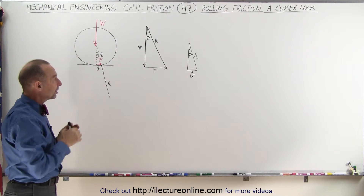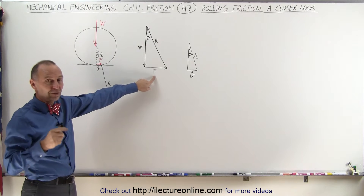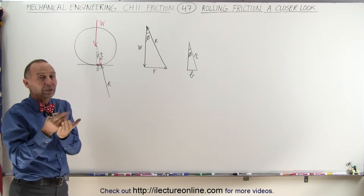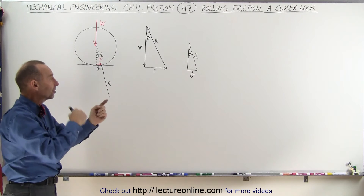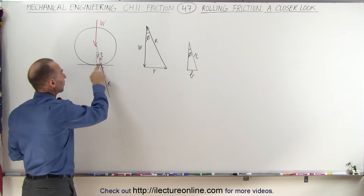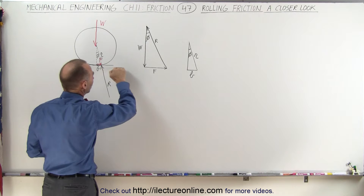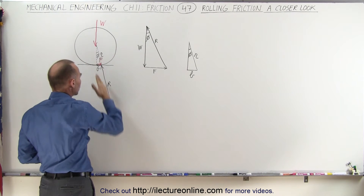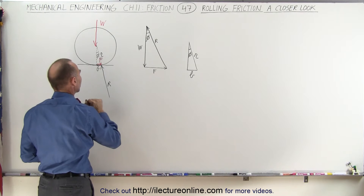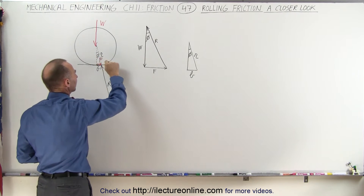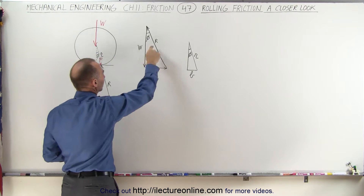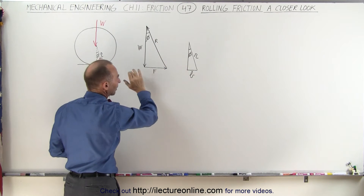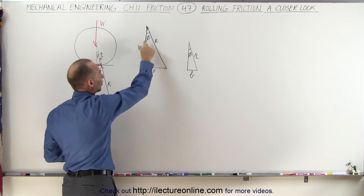When we add all the forces together, remember that f is the force required to overcome the friction — equal in magnitude to the friction but opposite in direction. So this represents the force required to keep the wheel rolling. This is the weight of the wheel or the load, and here is the reactionary force. The angle phi relates the three vectors: the weight, the reactionary force, and the force required to keep the tire rolling.